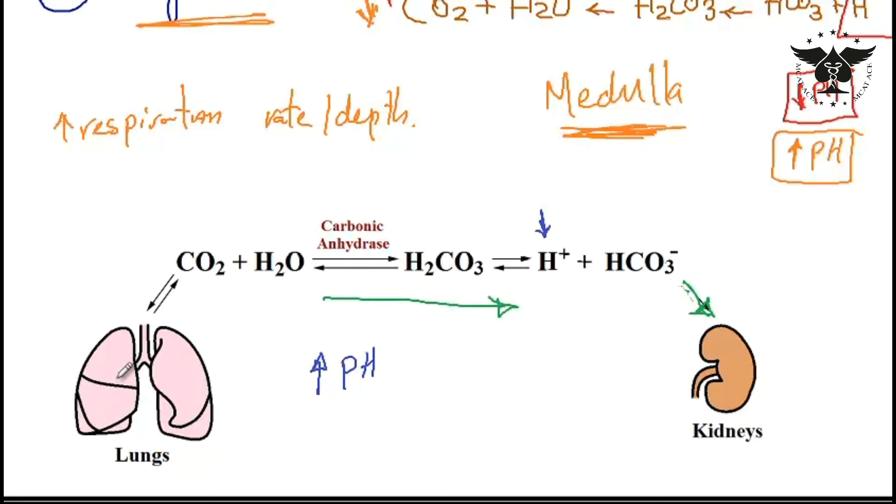Alternatively the respiratory rate could decrease. As a consequence there would be elevated CO2 in our blood that will again push the equation to the right side. Consequently there would be elevated H+ concentration and pH will drop until it normalizes.